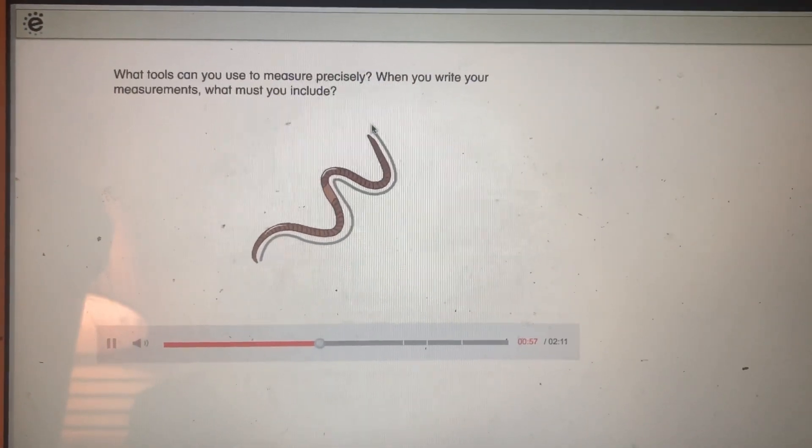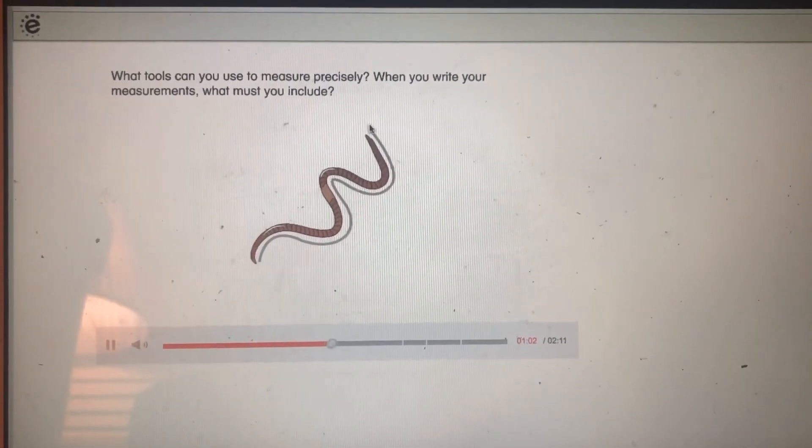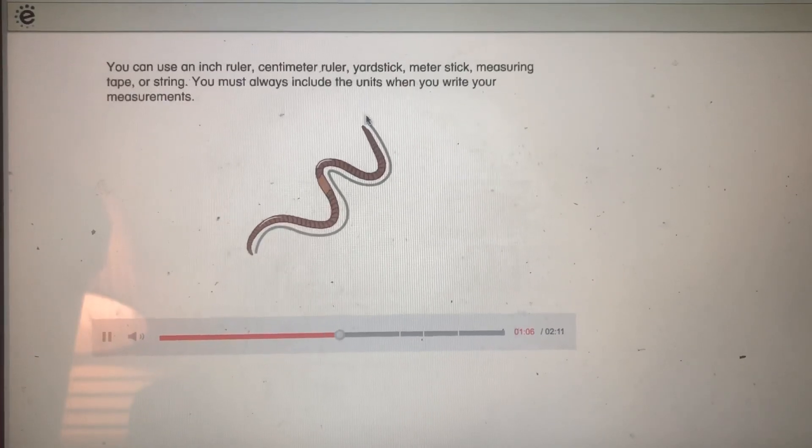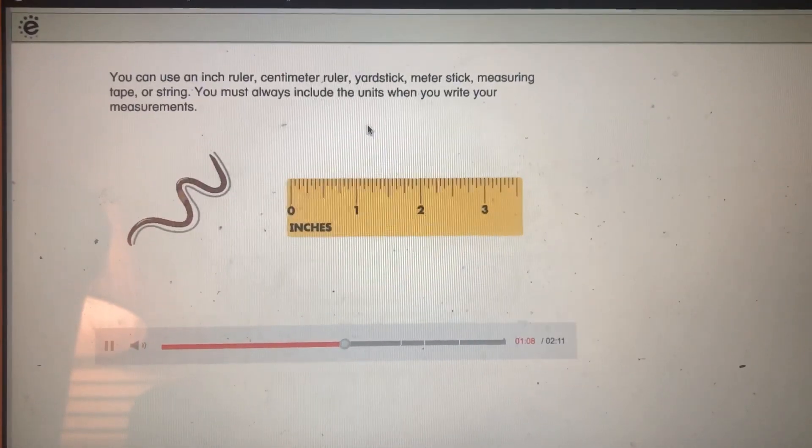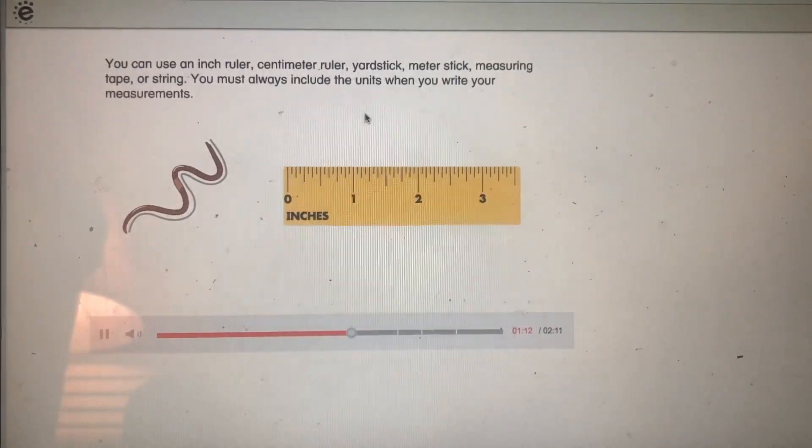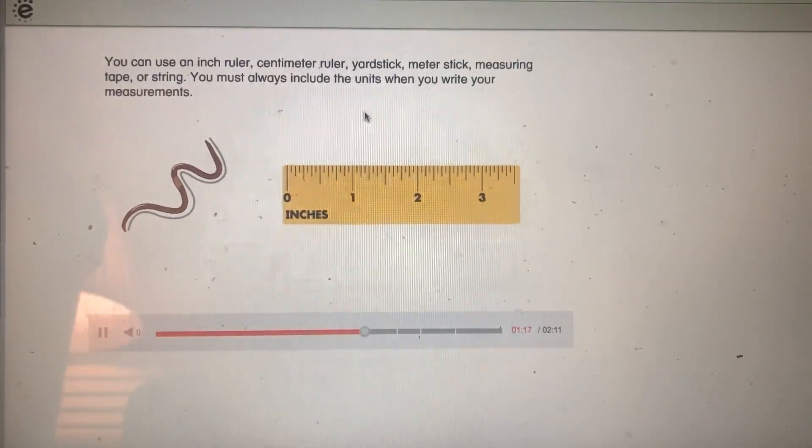What tools can you use to measure precisely? When you write your measurements, what must you include? You can use an inch ruler, centimeter ruler, yardstick, meter stick, measuring tape, or string. You must always include the units when you write your measurements.